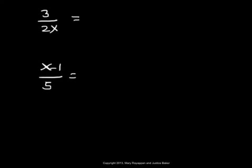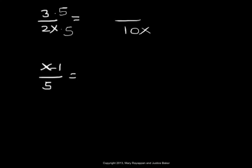We will now rewrite the rational expressions in the given problem, keeping the LCD as their denominator. The LCD is 10x. Take 3 over 2x and make its denominator 10x. Since 2x becomes 10x when we multiply by 5, and to keep the rational expression unchanged, what is done to the denominator must also be done to the numerator. So we multiply the numerator by 5 as well.